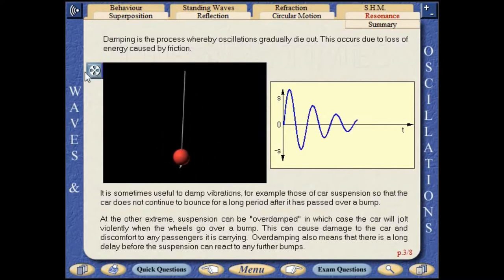At the other extreme suspension can be overdamped in which case the car will jolt violently when the wheels go over a bump. This can cause damage to the car and discomfort for any passengers it is carrying. Overdamping also means that there is a long delay before the suspension can react to any further bumps.